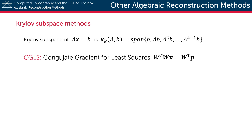A second class of algebraic reconstruction methods are Krylov subspace methods. Without going into too much detail, the main difference between SIRT-like techniques and Krylov methods is that in SIRT, the search direction in each iteration is determined only by the projection difference at that point. With Krylov methods, however, the search directions of all the previous iterations are also taken into account. At iteration k, the solution is then a linear combination of the subspace spanned by the data and the first k-1 powers of the system matrix.